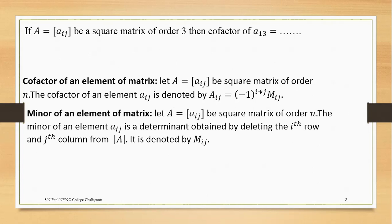Also, if i plus j is even, then we simply write Mij. If the sum is odd, then we multiply by a minus sign. So the answer here: capital A13 is equal to M13, since 1 plus 3 equals 4, the sum is even. This is the answer.